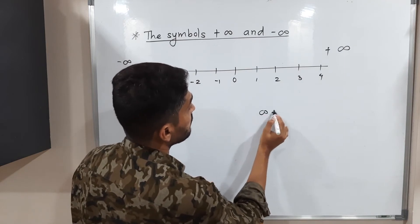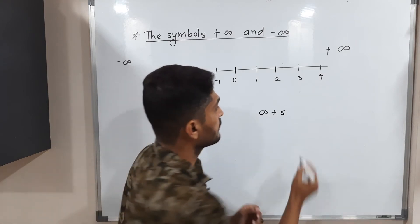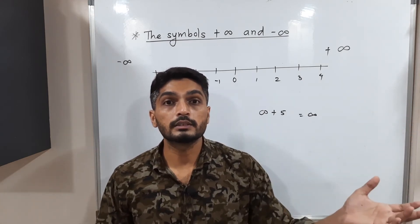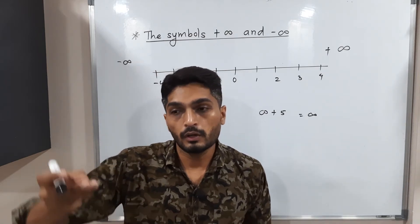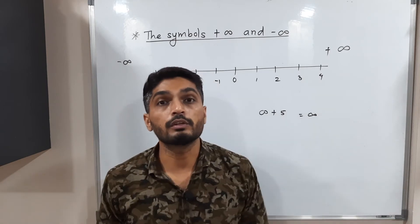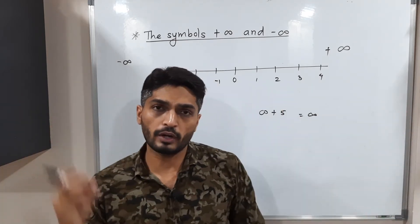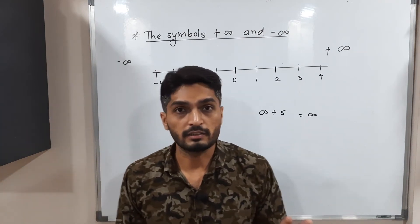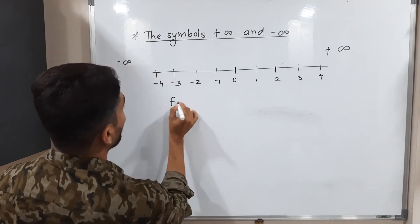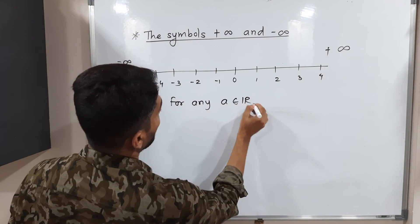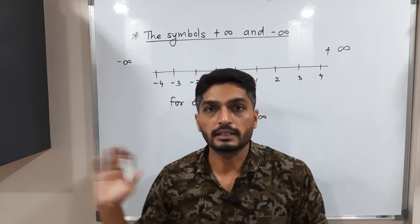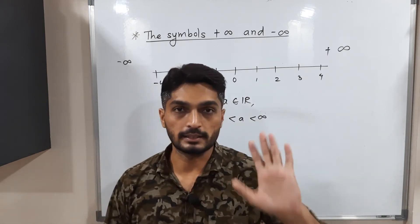Since infinity is a concept: if you add 5 to infinity, you still get infinity. Like a sea — there is infinite water; if you add one spoon or one bucket, it is still infinite. So adding or subtracting something from infinity gives you the same answer: infinity. For any a belonging to ℝ, we have −∞ < a < +∞, meaning every real number lies between −∞ and +∞.